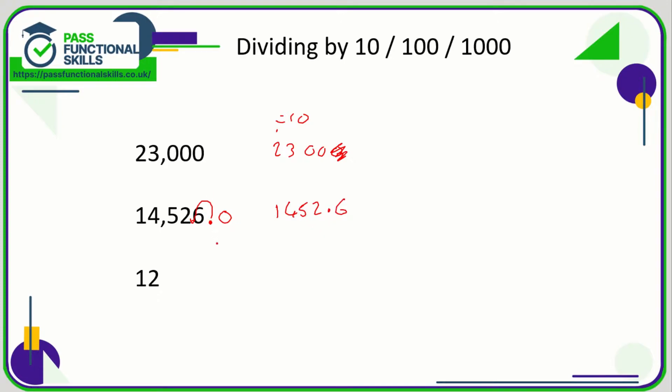If you're not sure which direction to move the decimal point, don't panic. It should be fairly obvious that if you're dividing by 10, you expect a smaller number, not a bigger number. So if you accidentally move the decimal point to the right instead of the left, you'll realize you've got a bigger number, so you've gone in the wrong direction.